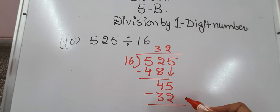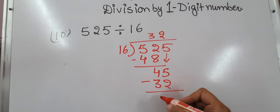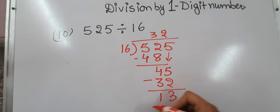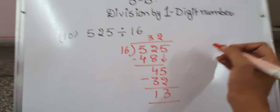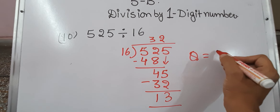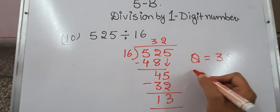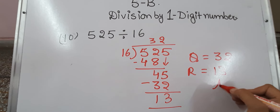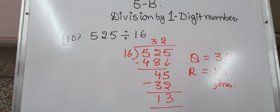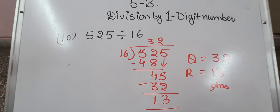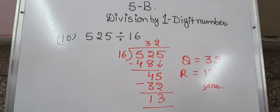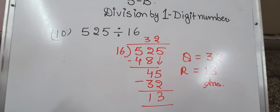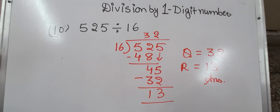We subtract. This gives us 3 and 1 — remainder 13. So the quotient is 32 and the remainder is 13. That's all for this class. In the next class we are going to learn division by larger numbers. Thank you.